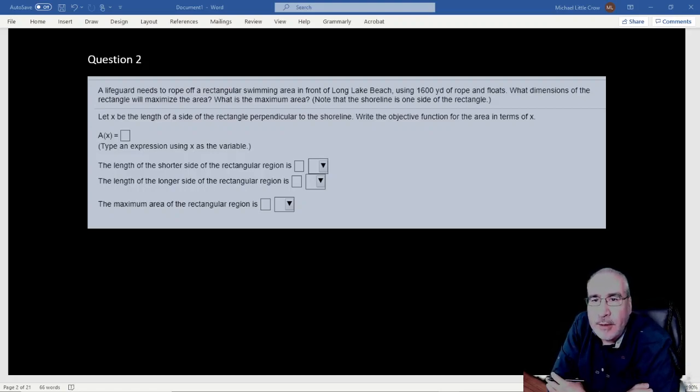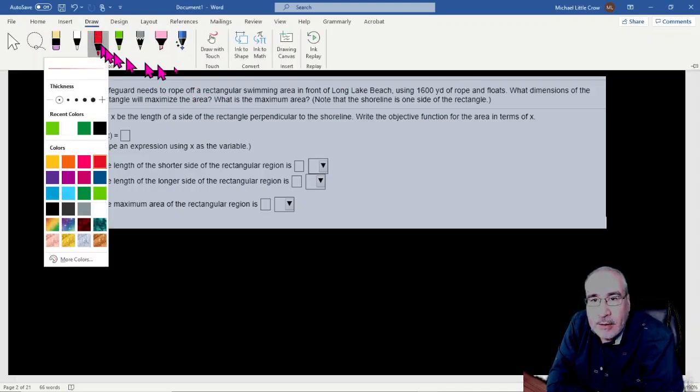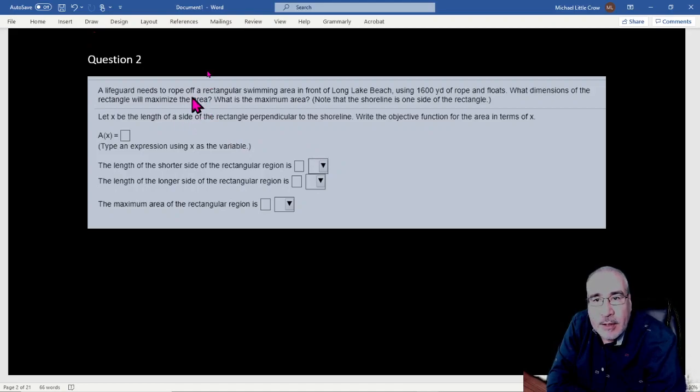Okay, question number two. Let's see what we got. A lifeguard needs to rope off a rectangular swimming area in front of Long Lake Beach. He's got 1600 yards of rope and floats. So what kind of rectangle will maximize the area? What is the maximum area? Okay, so we want to maximize the rectangular area in front of Long Lake Beach.